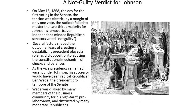On May 16, 1868, the day for the first voting in the Senate, the tension was electric. By a margin of only one vote, the Radicals failed to muster the two-thirds majority needed for Johnson's removal.